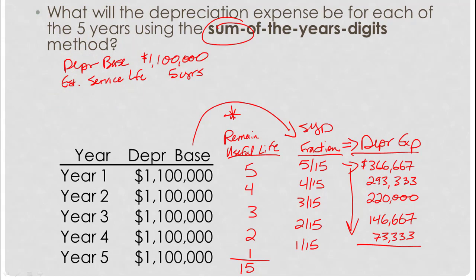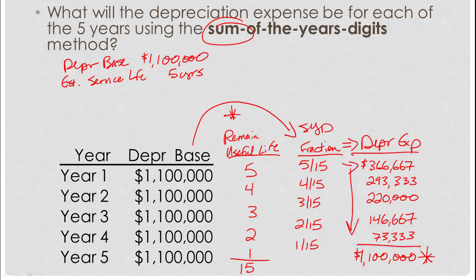Before we wrap up this method, two patterns worth noting: first, if you add up all the depreciation expense values, you get exactly the depreciation base — which is what we want. Second, notice that in the middle year of the sum of the years digits method, you get straight-line depreciation. This always works that way when there's an odd number of years, and it provides a check to make sure you're doing it right.